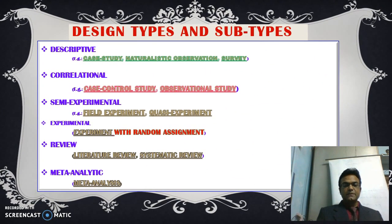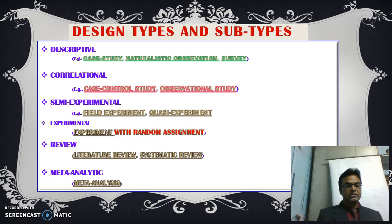Now, design types and subtypes — there are various research designs. Descriptive type includes case study, naturalistic observation, survey, etc. Correlational includes case control study and observational study. Semi-experimental includes field experiment and quasi-experiment. Experimental includes experiment with random assignments, etc. Review includes literature review and systematic review. Meta-analytic includes meta-analysis.